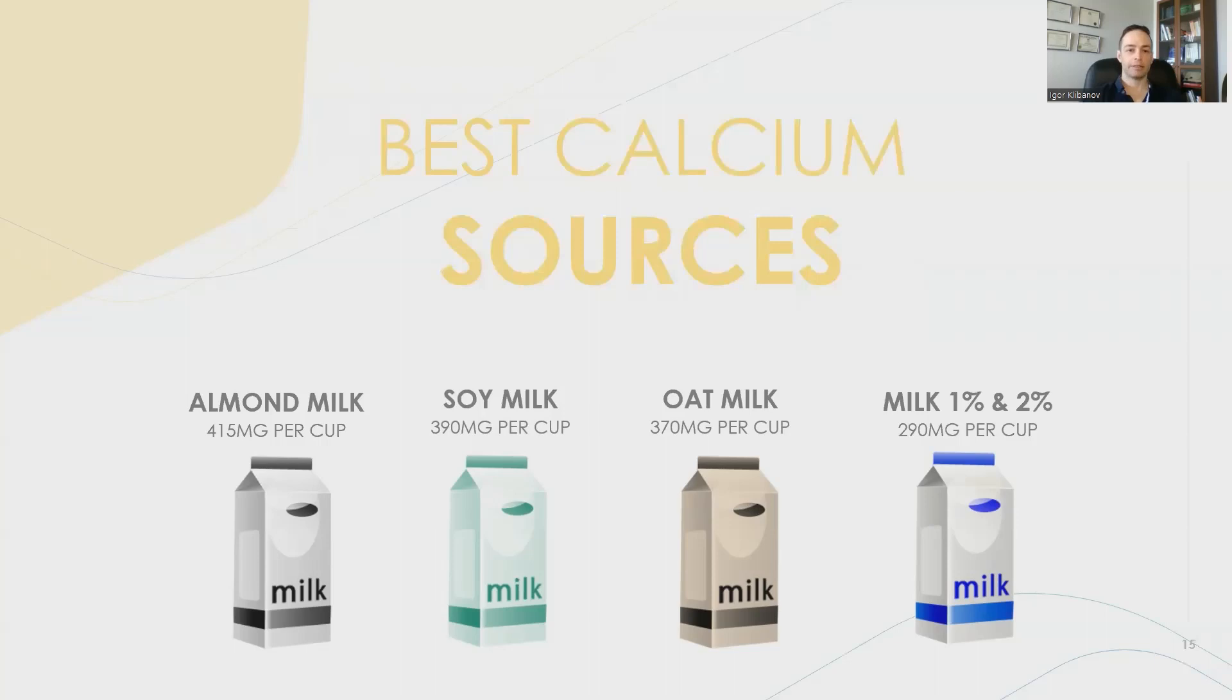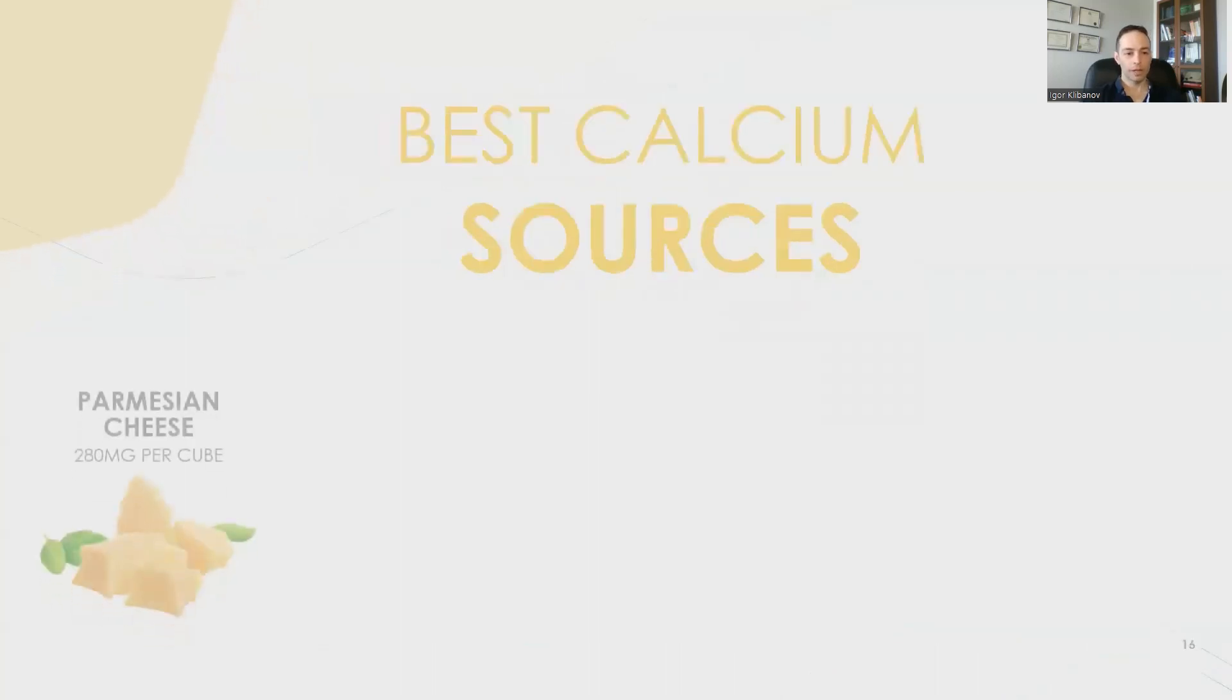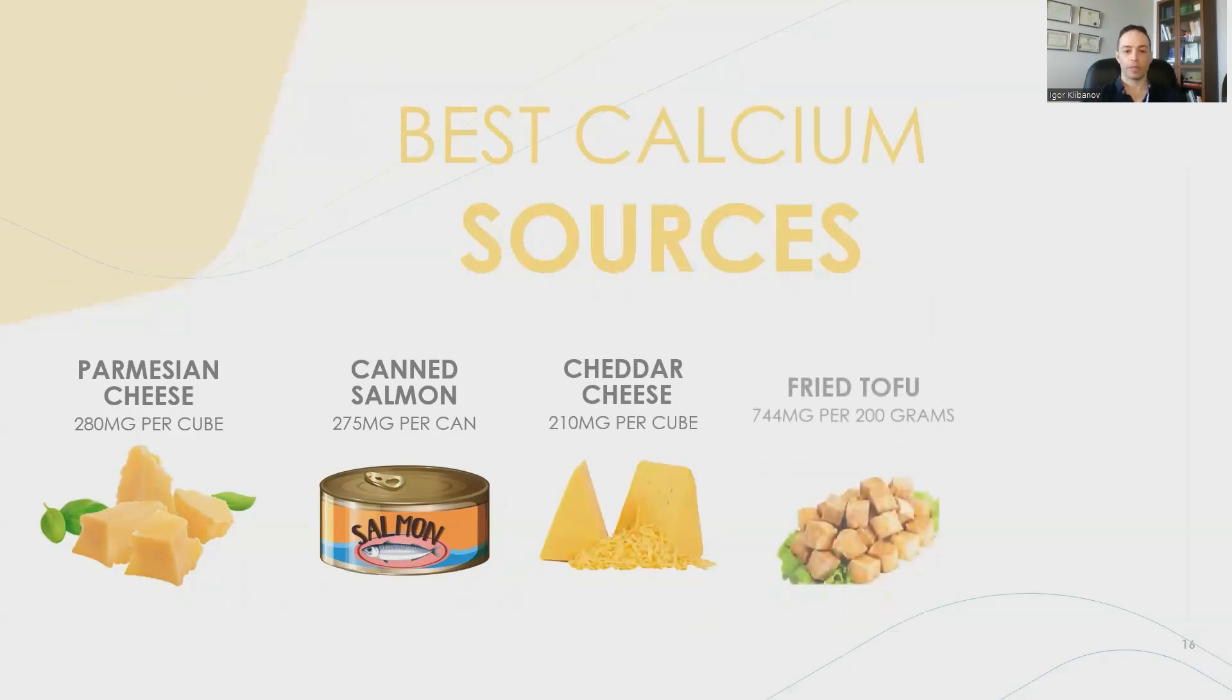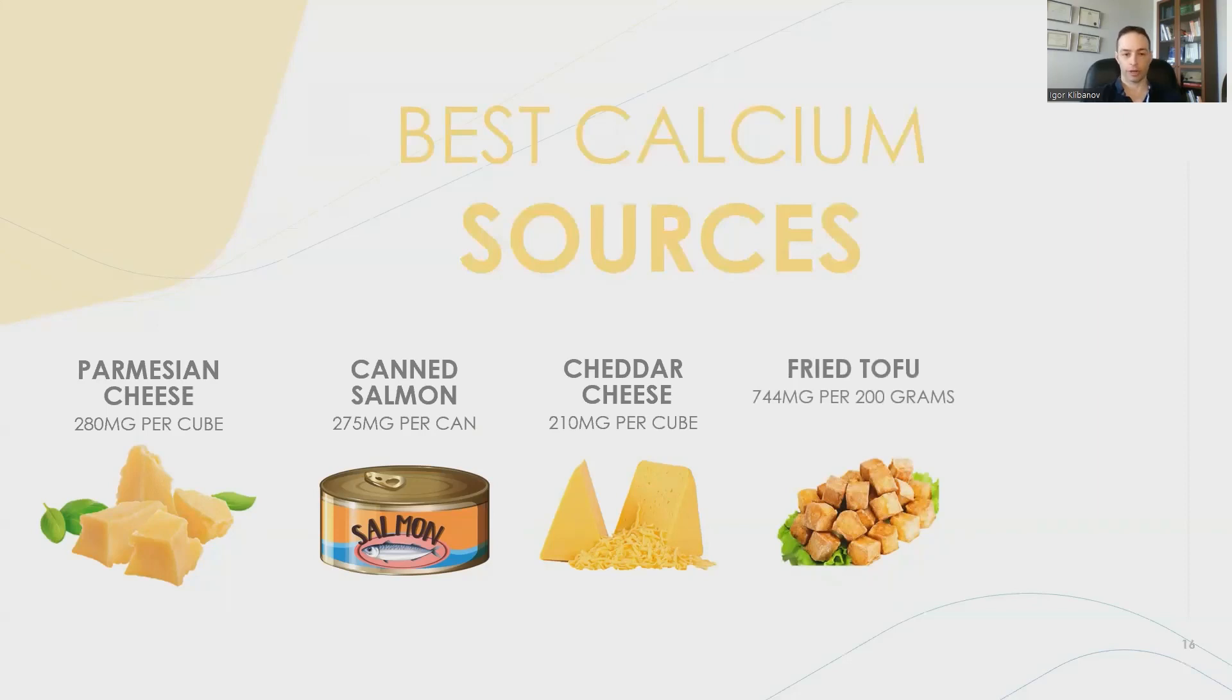Now, what about cheese and fish and other sources? Let's look at that. Parmesan cheese contains 280 milligrams of calcium per cube, which is a real-life serving. Canned salmon contains 270 milligrams per can. Cheddar contains 210 milligrams per cube. Fried tofu, 744 milligrams per 200 grams, which is a real-life serving. And a can of sardines contains 320 milligrams of calcium.